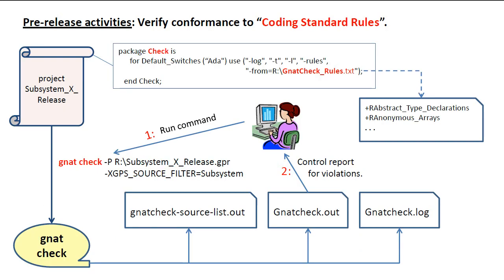In this process, we verify that the software conforms to the coding standard by checking the source code against a set of semantic rules specified in an external file. The path to this file is specified in the GANAT check in the check package of the release project, which is inherited by the workspace and therefore available to each developer. Now, we'd like to think that no developer would check in a unit without first running GANAT check and doing whatever is necessary to eliminate any reported violations. However, we cannot make this assumption, and therefore the entire subsystem must be submitted to a GANAT check process.